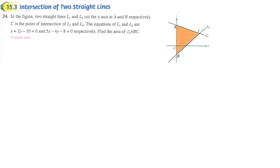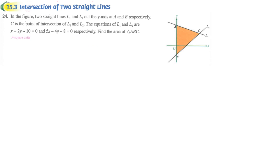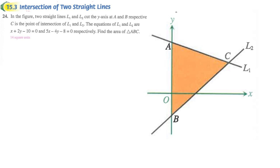Here is some application. In this question, they give you two lines together with the equations of each line. We have to find the area of triangle ABC. In order to find out the area, there are some things that we need — we need to get the base and the height.